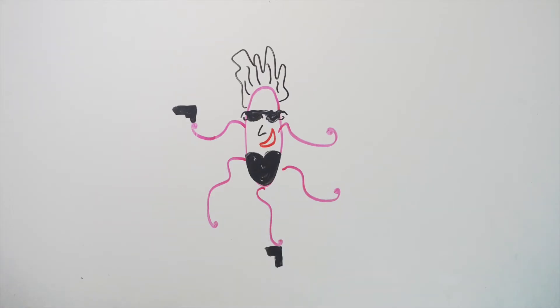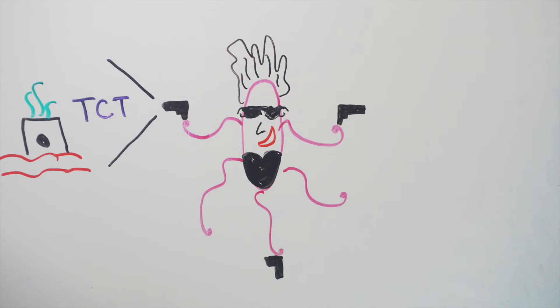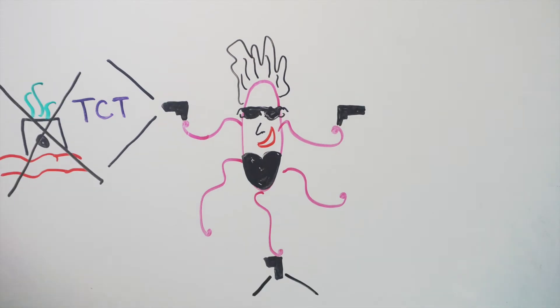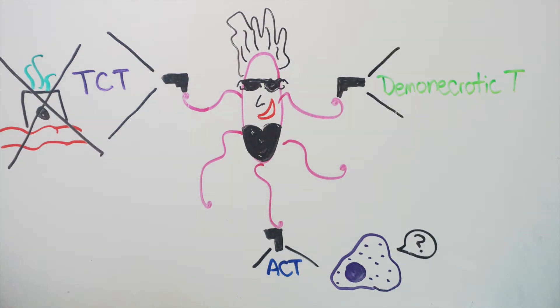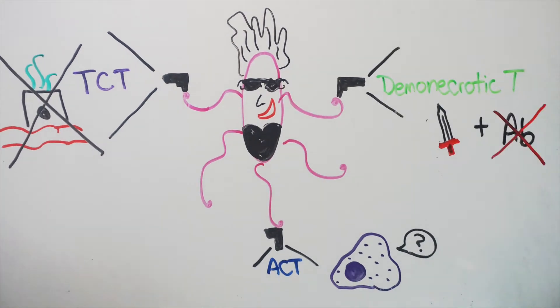She has an arsenal of exotoxins, from tracheocytotoxin to cause direct epithelial killing and ciliostasis, to adenylate cyclase toxin to inhibit phagocytic function, and dermonecrotic toxin to damage tissues and suppress humoral immune response.